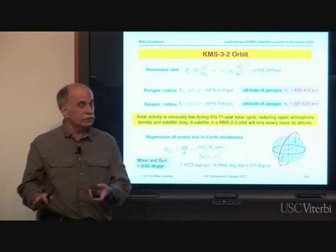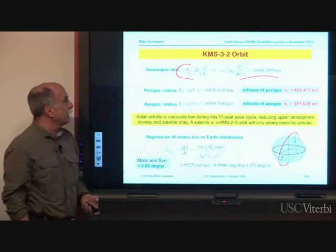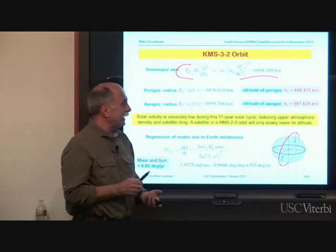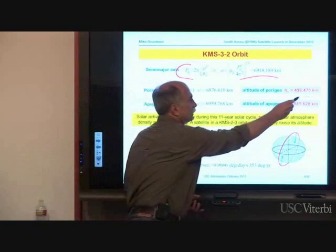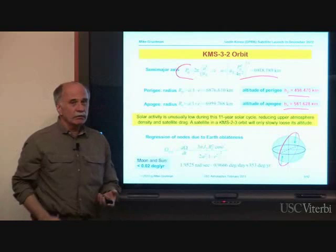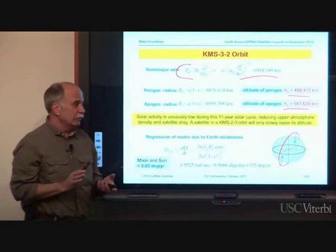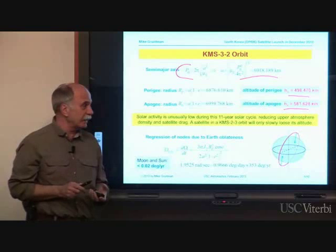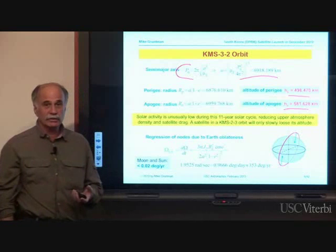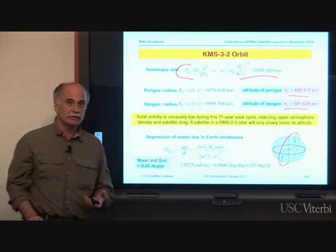Continuing from the orbital period, we can immediately get the semi-major axis of the orbit and calculate the radius of perigee and apogee. The satellite altitude of perigee is 498 kilometers and the altitude of apogee is 582 kilometers. Solar activity is unusually low during this 11-year solar cycle, which reduces atmospheric density and satellite drag. So one can expect that this Korean satellite, KMS-3, will only slowly lose altitude over time.